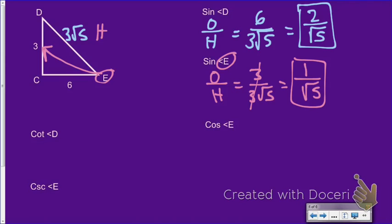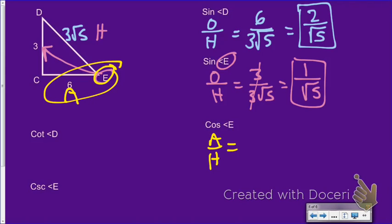Now let's find the cosine of angle E. For cosine I need adjacent over hypotenuse. My adjacent side next to angle E is 6, so it's 6 over 3√5, which simplifies the same as the sine of angle D — 2 over √5. The cosine of E equals the sine of D, and there's a reason for that which we'll actually talk about a little later in this unit.